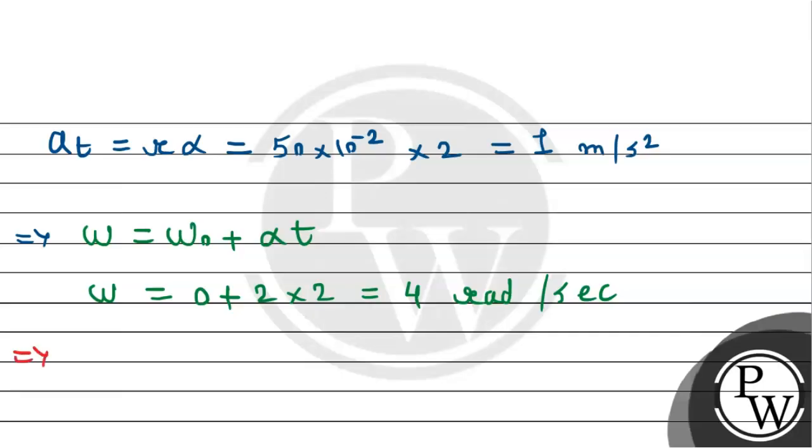Now by using this we can find the centripetal acceleration ac. It will be r times omega square. This will equal to r, which is 50 centimeter, converting to meter that's 10 to the power minus 2, multiply by omega squared, which is 4 squared equals 16. 16 multiply by 50 gives 800, which simplifies to 8 meter per second square. This is the centripetal acceleration.